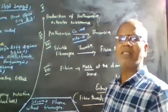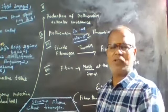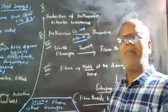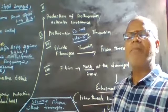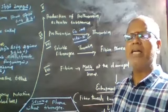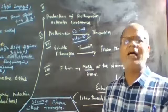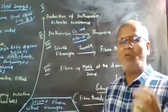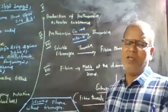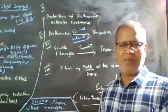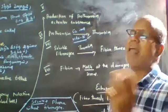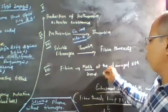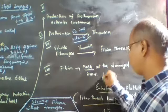Thrombin, with the help of calcium ions, has the ability to convert soluble fibrinogen present in the blood plasma into insoluble fibrin. Fibrin then forms threads and creates a mesh over the injured area.